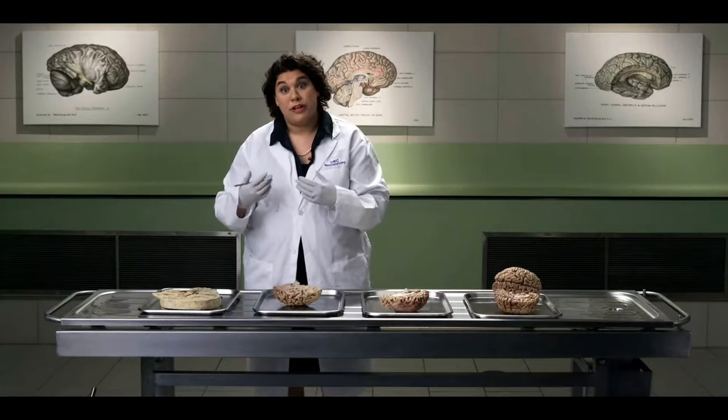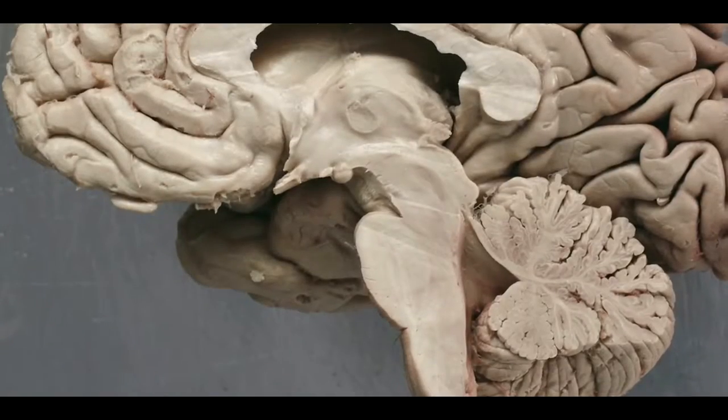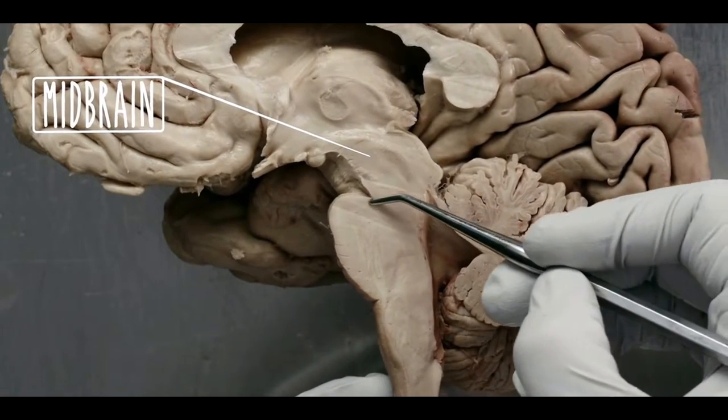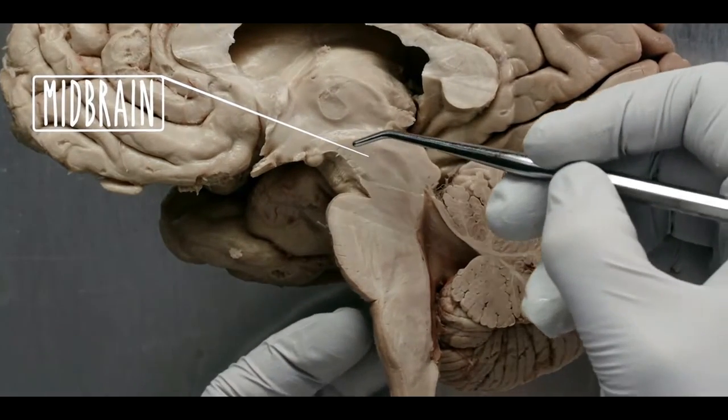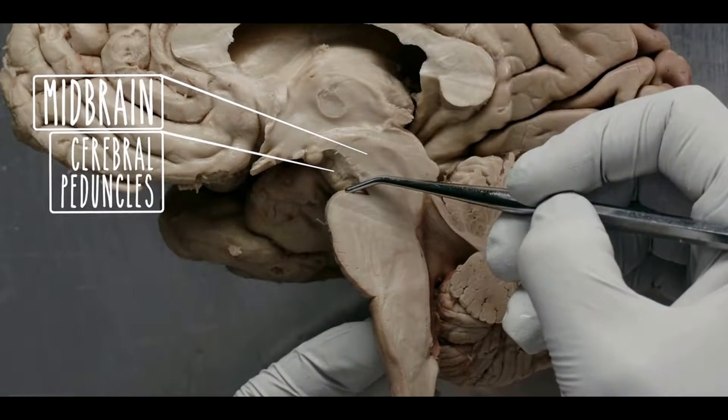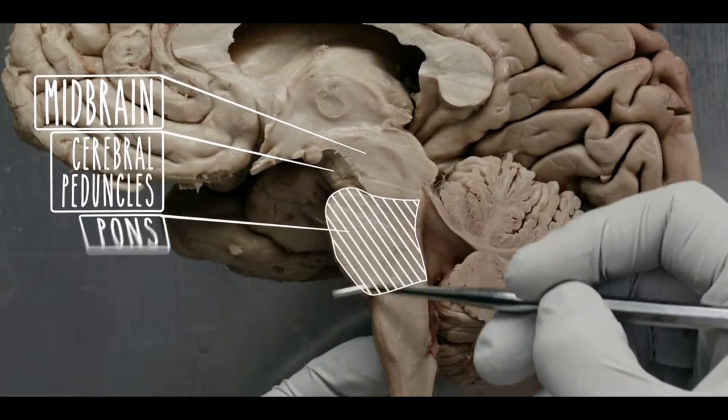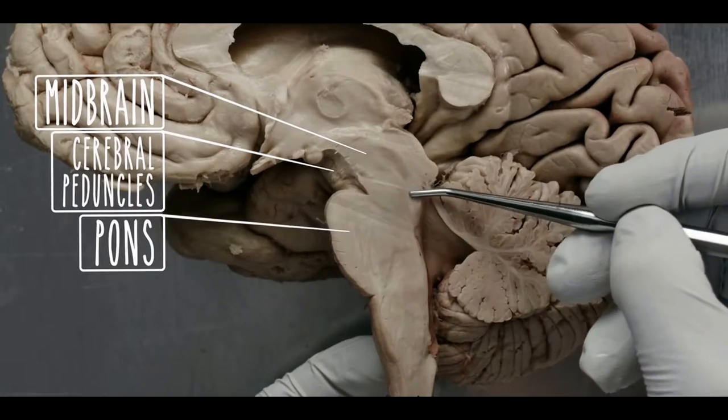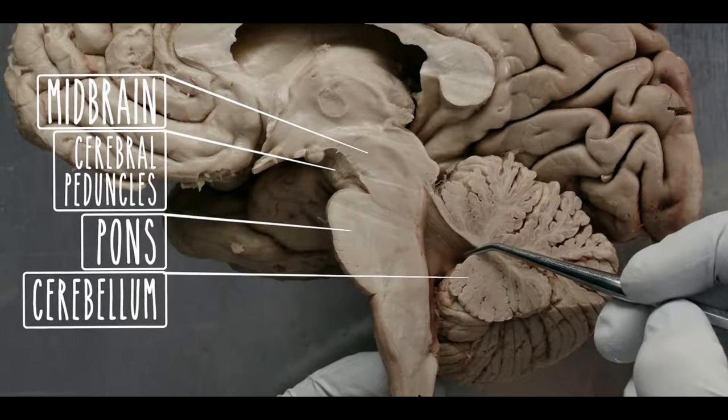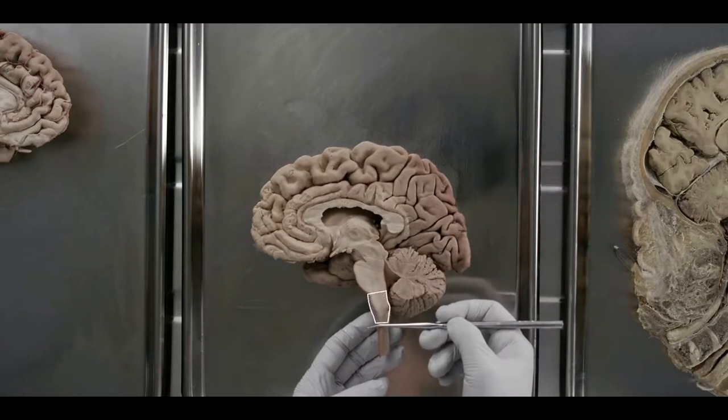We now move into the brainstem, which is caudal to the diencephalon. The brainstem can be divided into three parts: the midbrain, located just caudal to the thalamus, contains the large fiber bundles, the cerebral peduncles, that connect the forebrain with all caudal structures. The pons is located caudal to the midbrain and is connected to the cerebellum through the cerebellar peduncles. The most caudal part of the brainstem is the medulla, which is continuous with the spinal cord as it exits through foramen magnum.